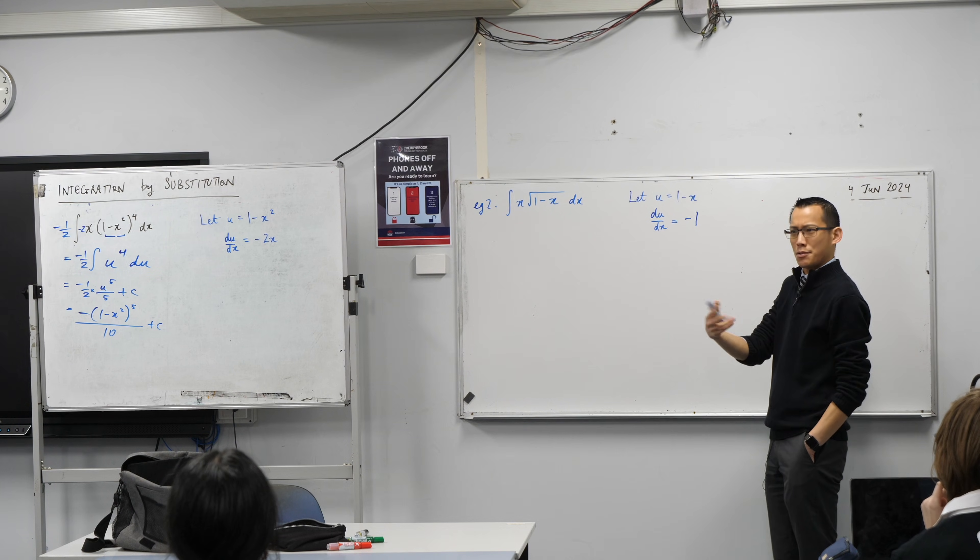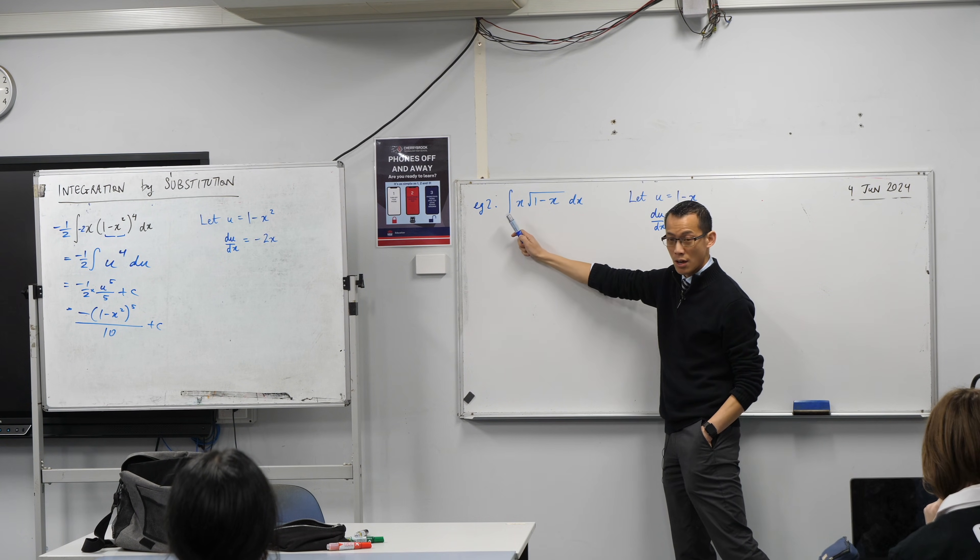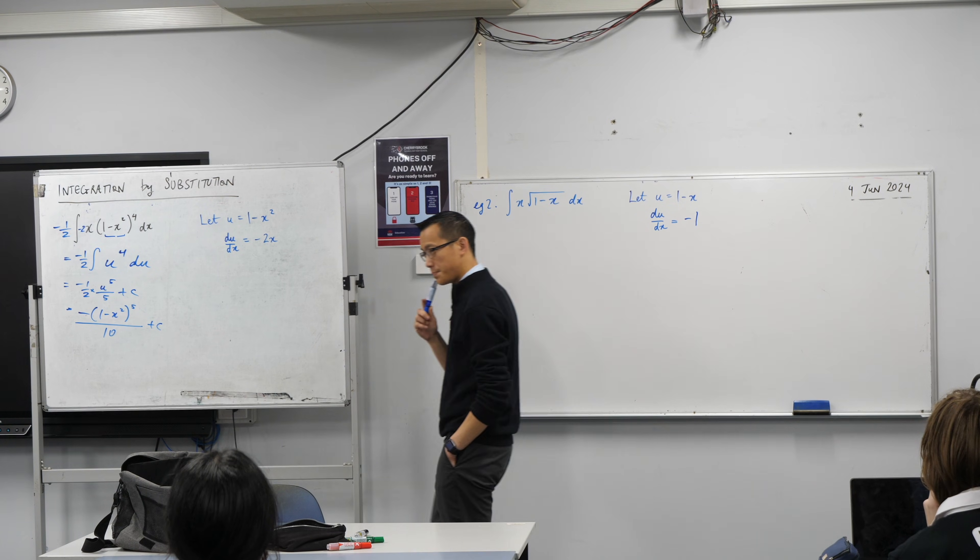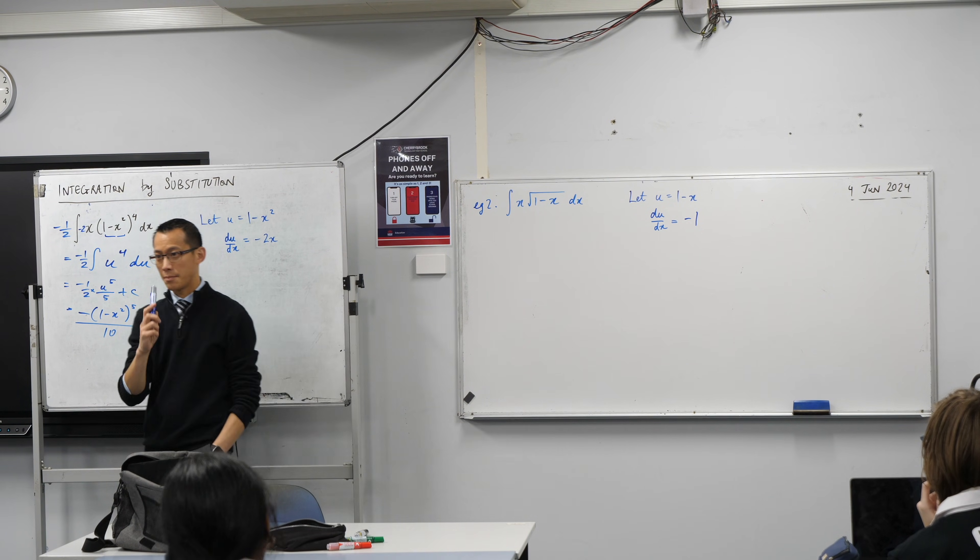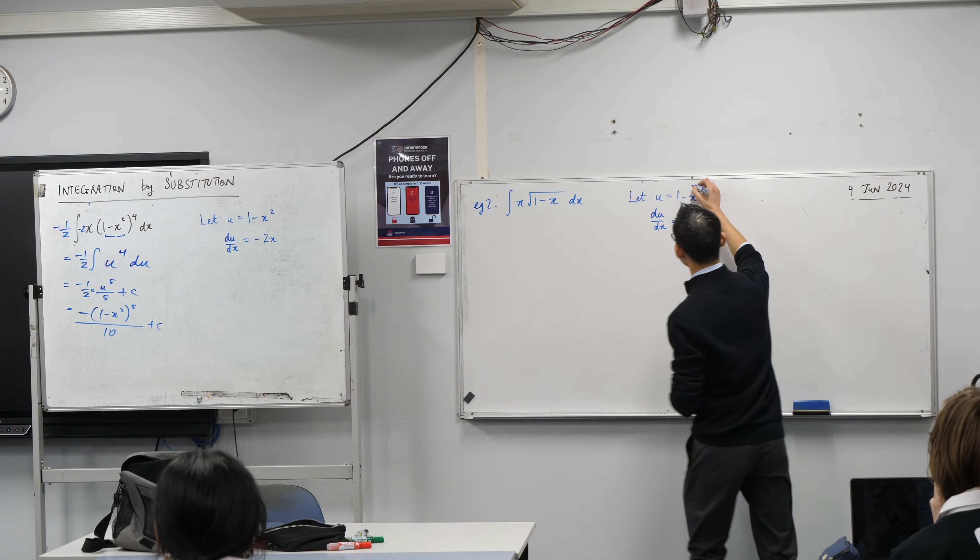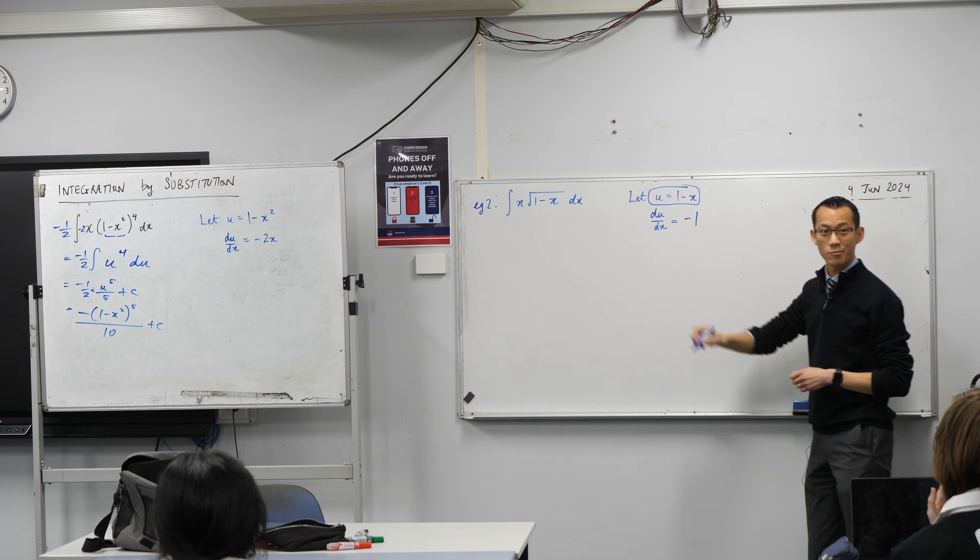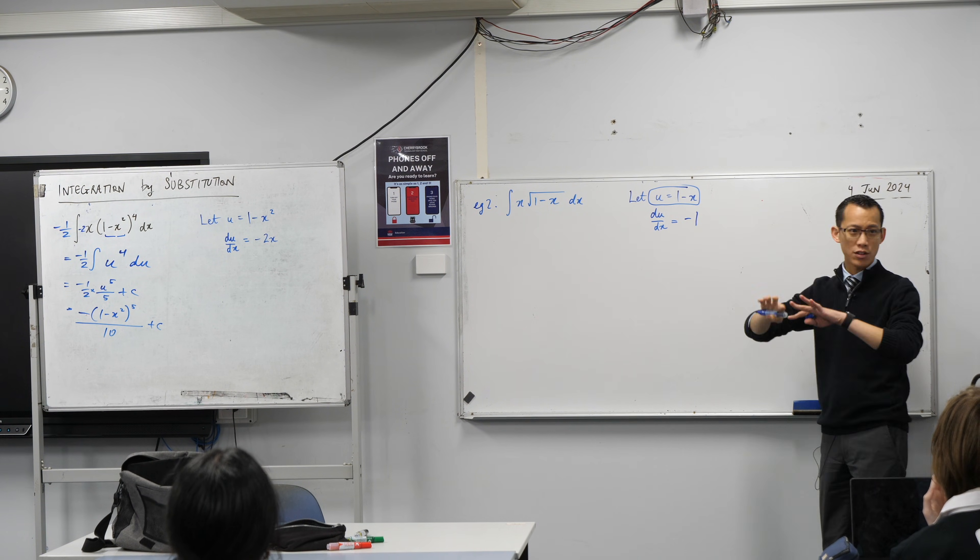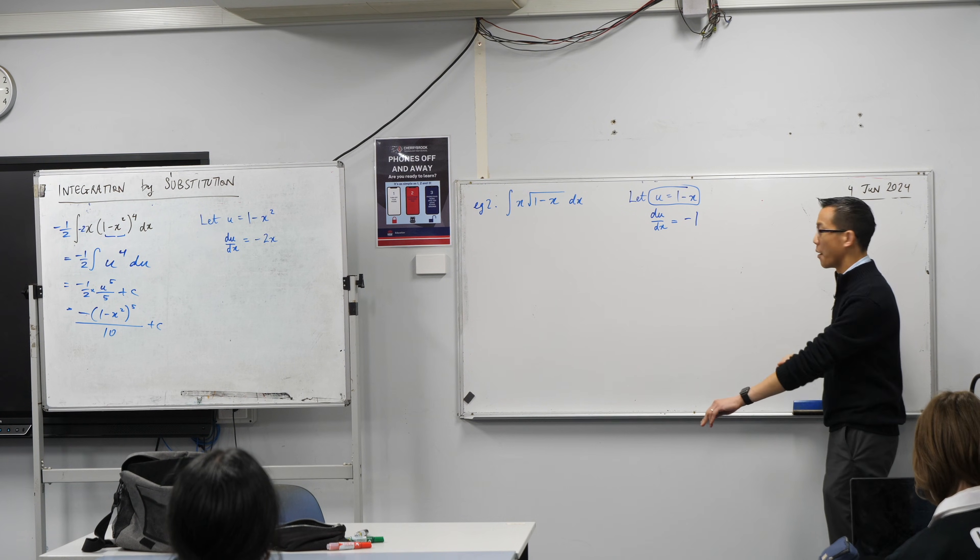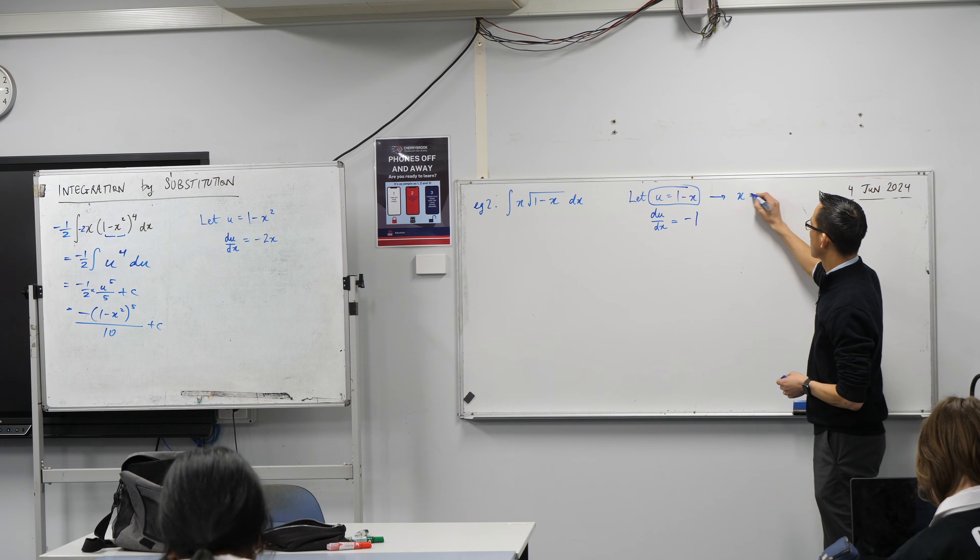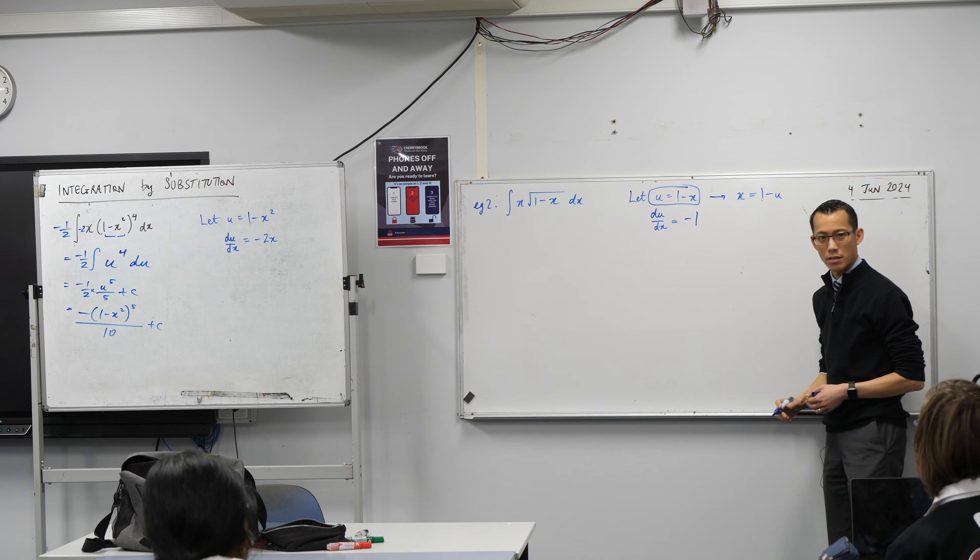Thankfully, though, it's just as easy to change this x to be something in terms of u, I just don't need the derivative for it. Can anyone give me a suggestion? Have a look at this first line here, right? I already have an x just right there, okay? So if I just rearrange and change the subject, that'll work perfectly. So what I'll do is I'll add x to both sides, and I'll subtract u from both sides. You see that?